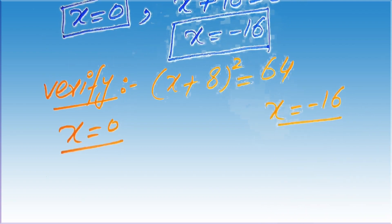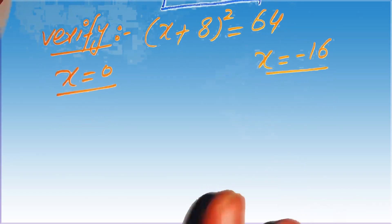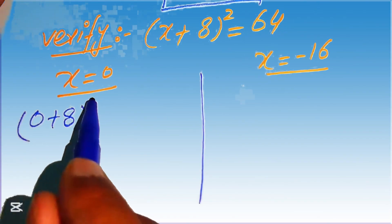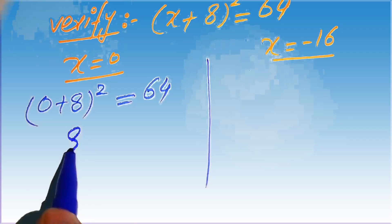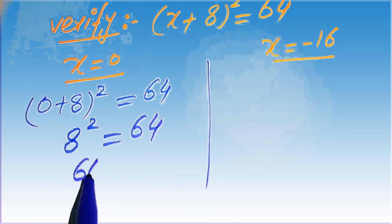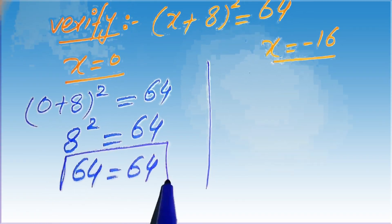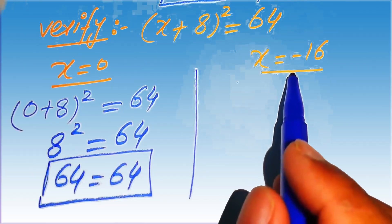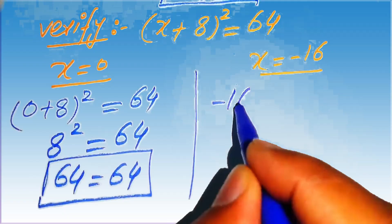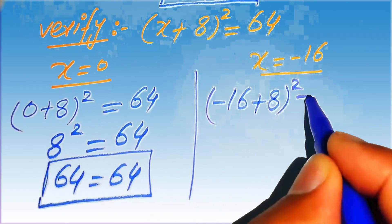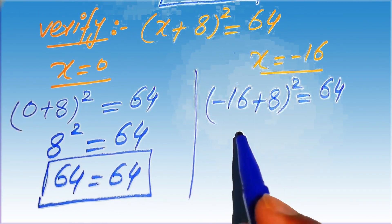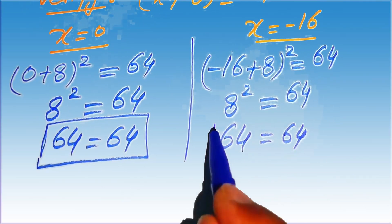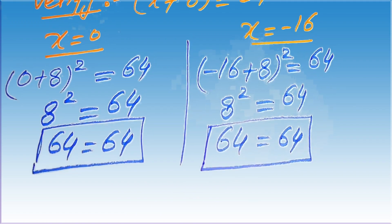Substituting x equals 0: 0 plus 8 whole squared equals 8 squared equals 64, which equals 64. This confirms x equals 0 satisfies the equation. Substituting x equals minus 16: minus 16 plus 8 whole squared equals negative 8 squared equals 64, which equals 64. This confirms x equals minus 16 also satisfies the equation.